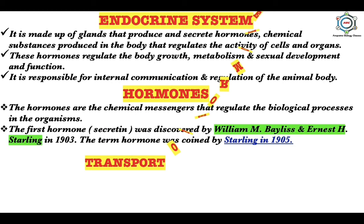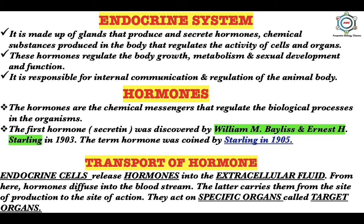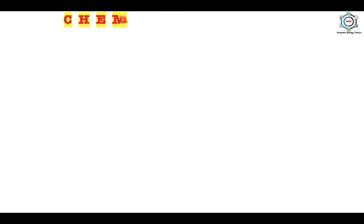The question is: how are hormones transported in the body? Endocrine cells release hormones into the extracellular fluid; from here hormones diffuse into the bloodstream. The bloodstream carries them from the site of production to the site of action, where they act on specific organs called target organs. All hormones are present in the blood, but the target organ picks up the specific hormones because every target organ has specific receptors for specific hormones.